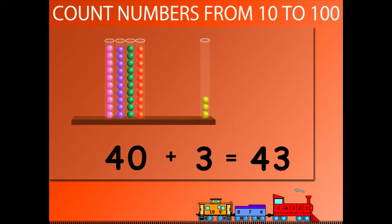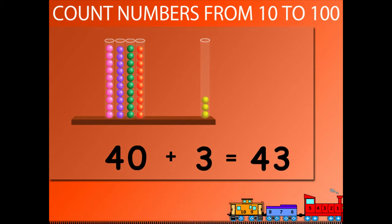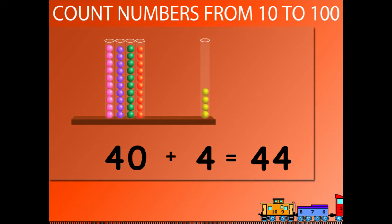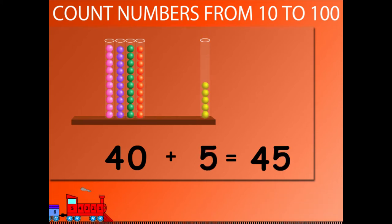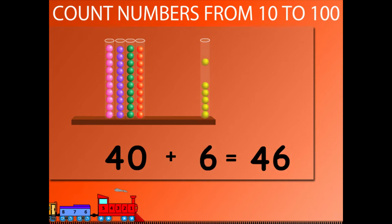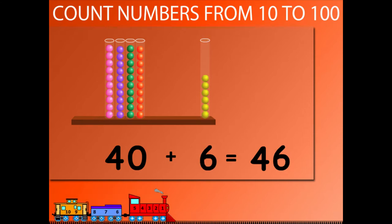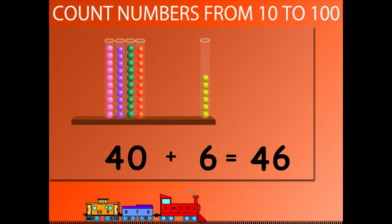40 plus 3 is equal to 43. 40 plus 4 is equal to 44. 40 plus 5 is equal to 45. 40 plus 6 is equal to 46.